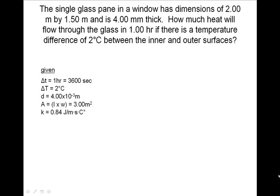The surface area of the glass is equal to the length times the width. After multiplying these values, we get an area of 3.00 meters squared. We will also need the value of the thermal conductivity of glass.